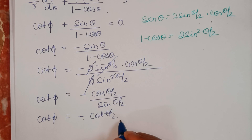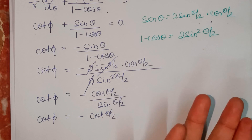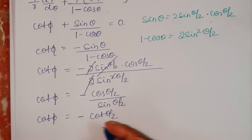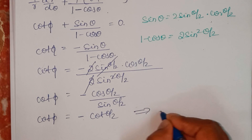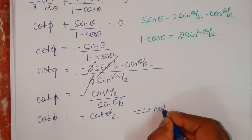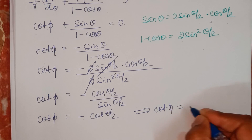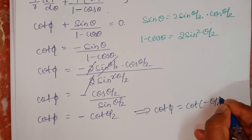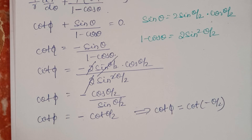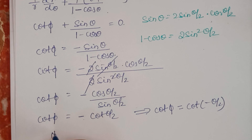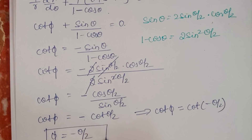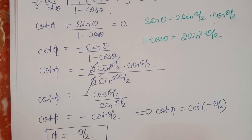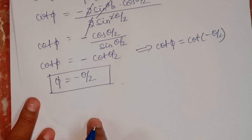Minus cot of an angle equals cot of minus that angle, so cot φ equals cot(−θ/2). Therefore φ equals minus θ/2. We have obtained the value of φ.